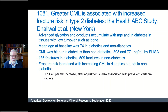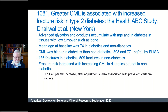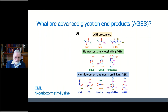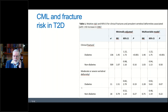An abstract presented at the ASVMR related CML to fracture risk in the Health ABC cohort. CML was measured using ELISA, and they found that for every standard deviation increase in serum CML there was a 1.4-fold association with fracture risk, also associated with prevalent fractures. This association was found for clinical fractures and was borderline for vertebral fractures. Not only is pentosidine associated with fractures but so too is CML, working through a different pathway — the RAGE receptor — which is intriguing.